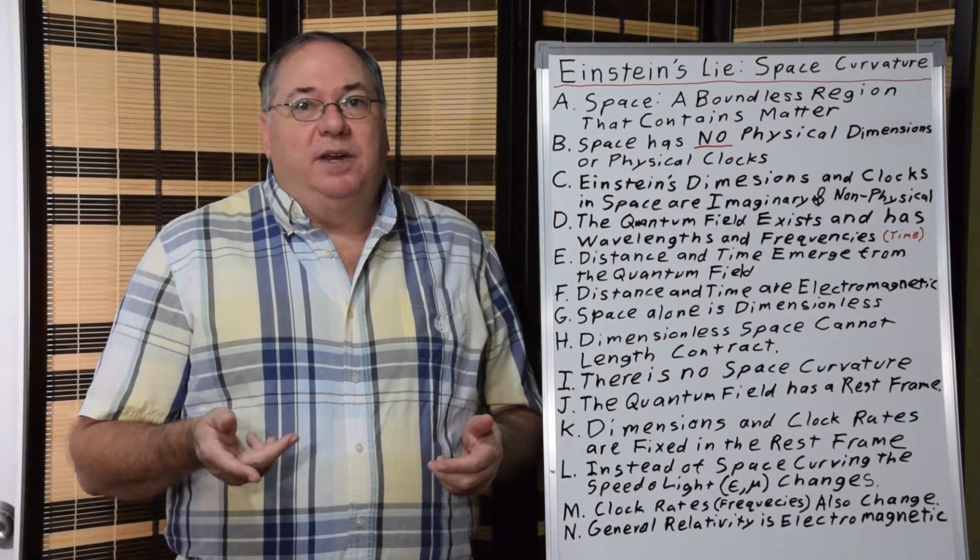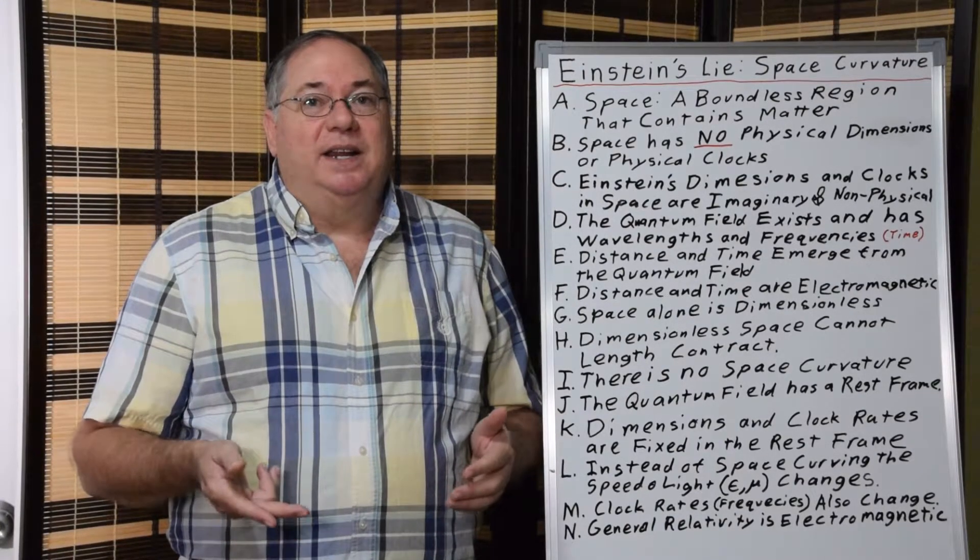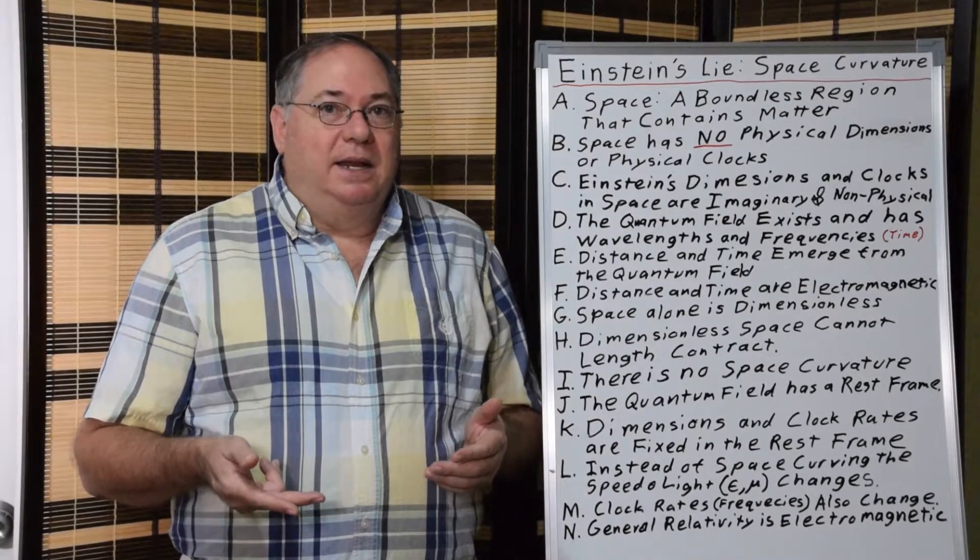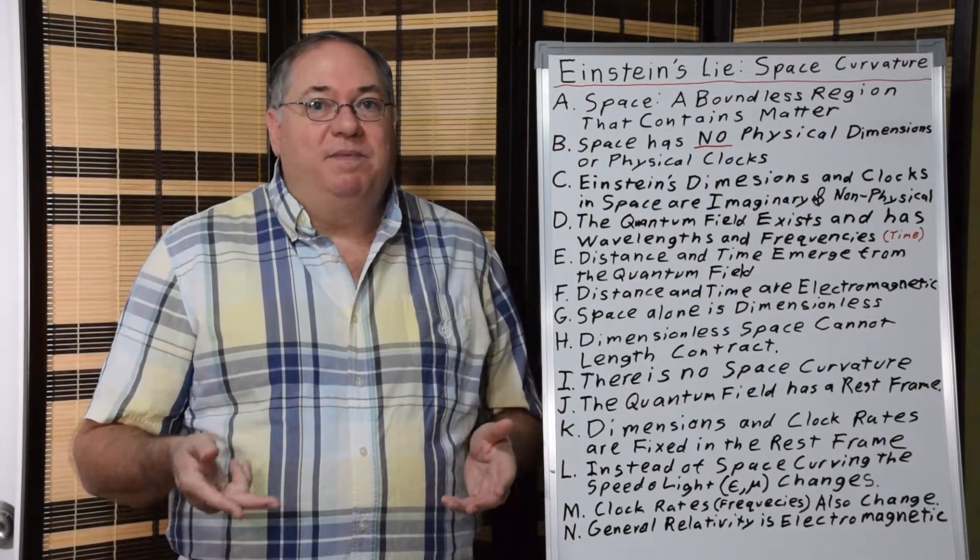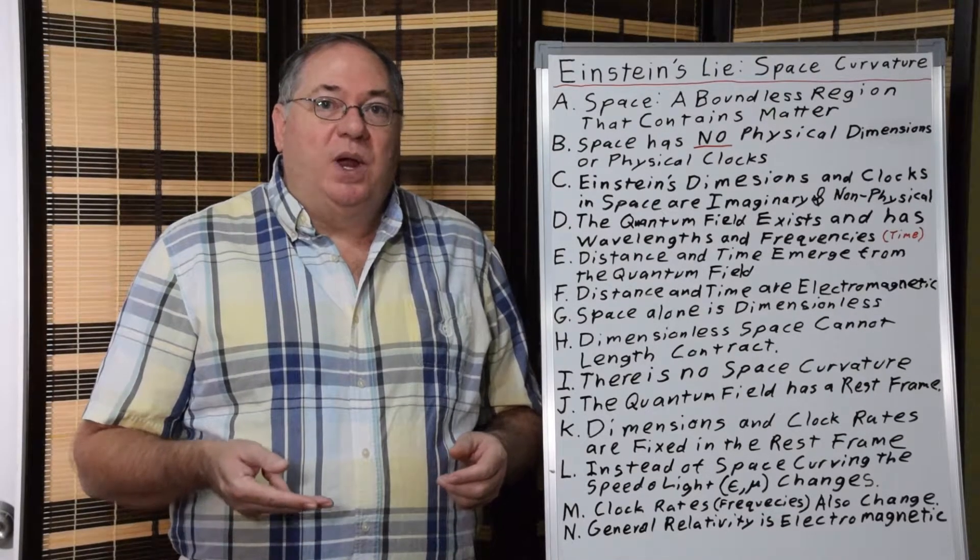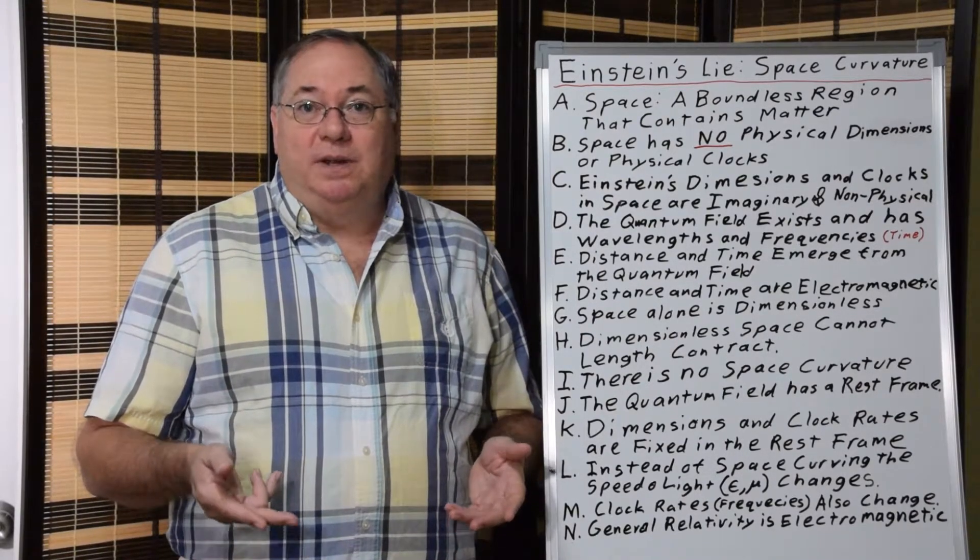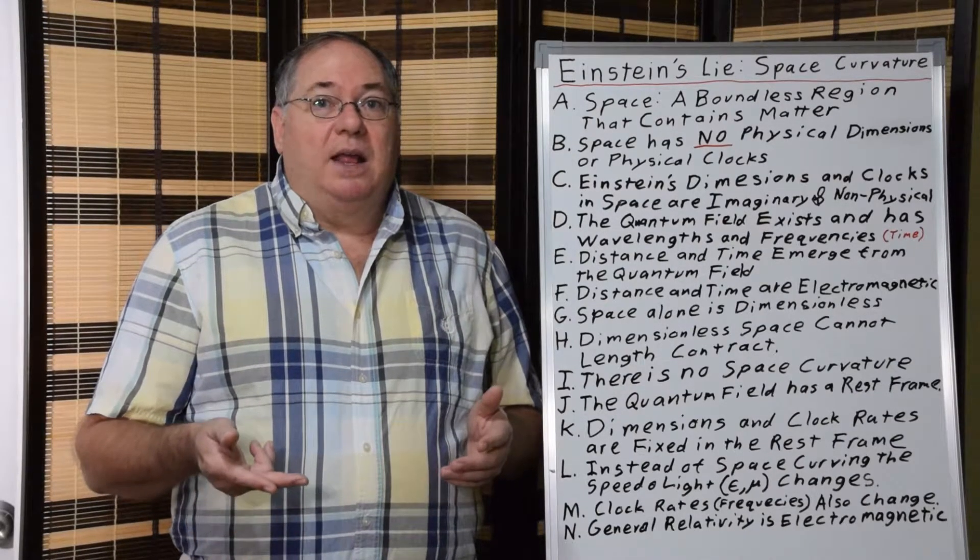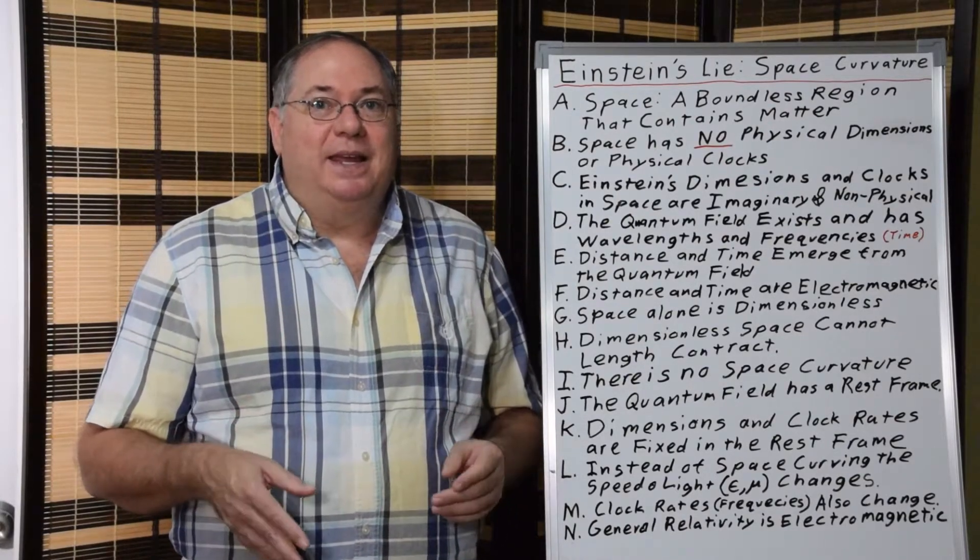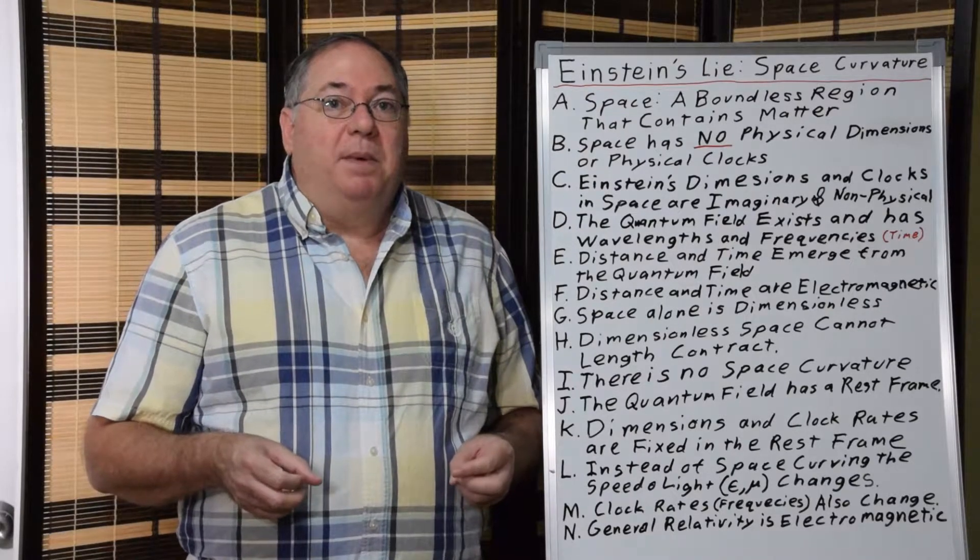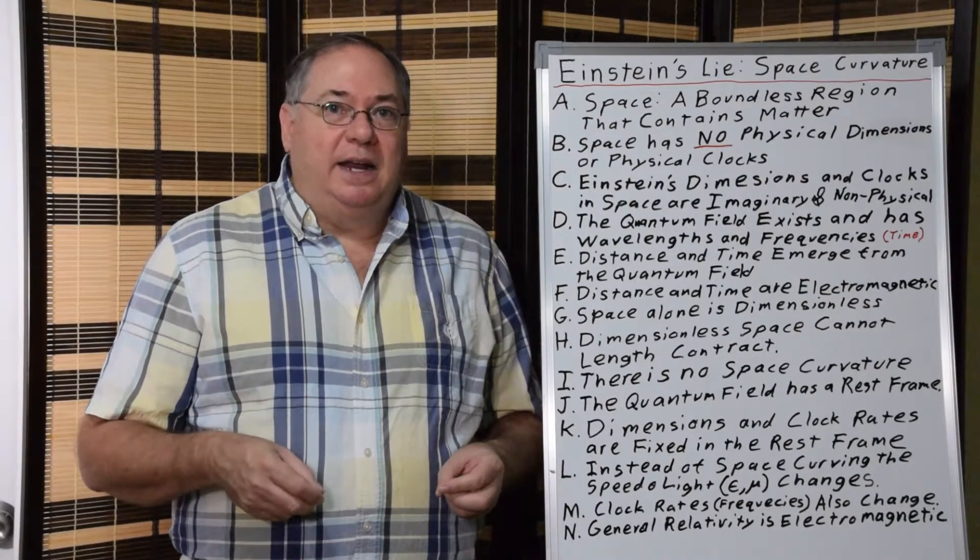The other advantage with quantum field theory in addition to having physically real dimensions and clock rates is that it's an electromagnetic phenomenon. Those wavelengths and frequencies are described as part of electromagnetic theory of quantum field theory in general. And so if we use the quantum field dimensions and clocks to explain special and general relativity, the relativistic effects and the general relativistic effects can be described entirely as electromagnetic phenomena.